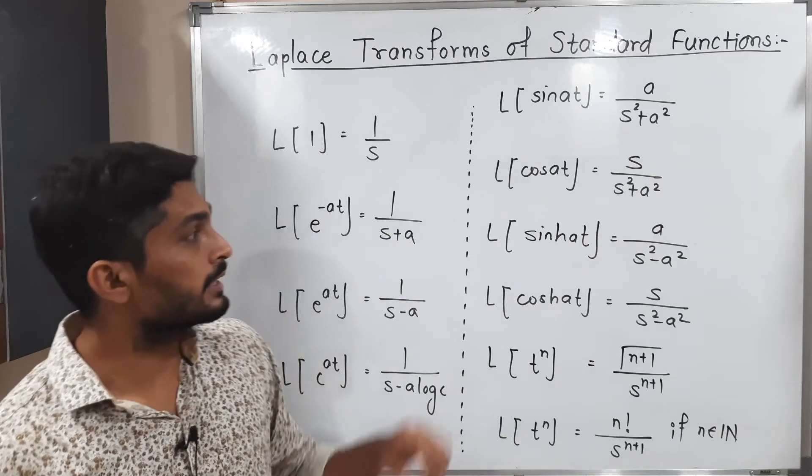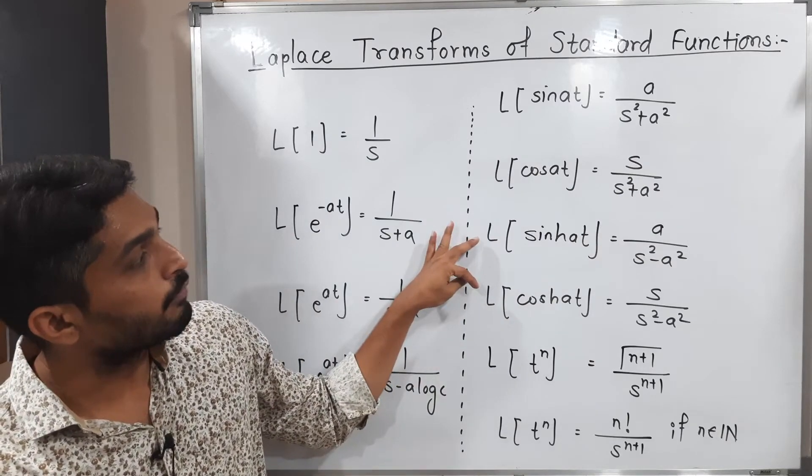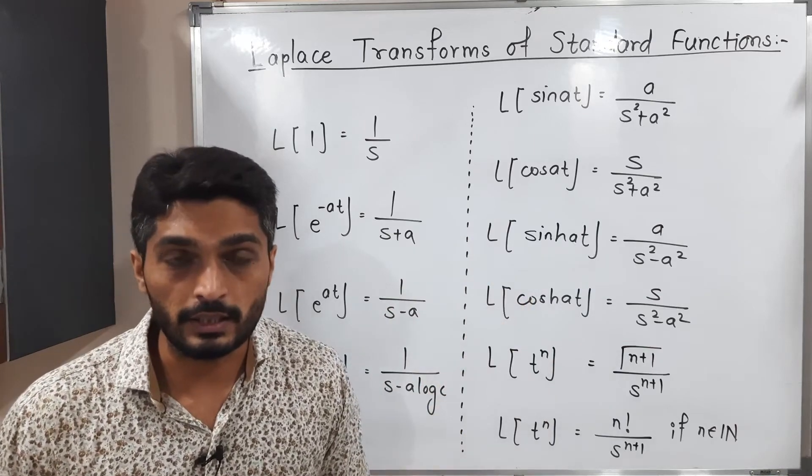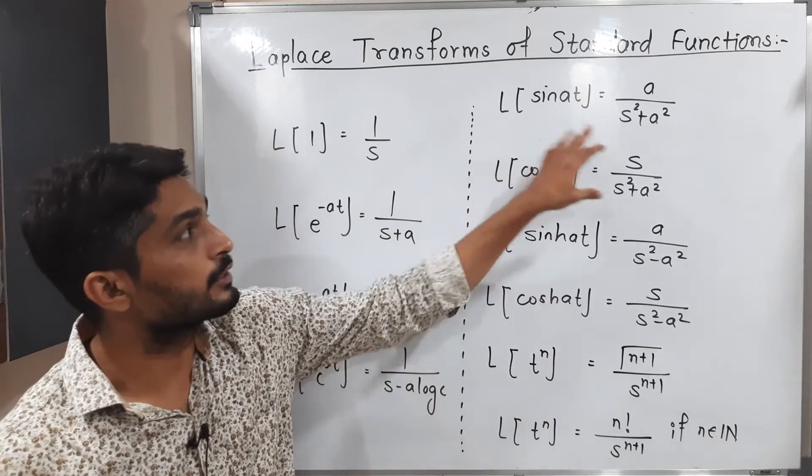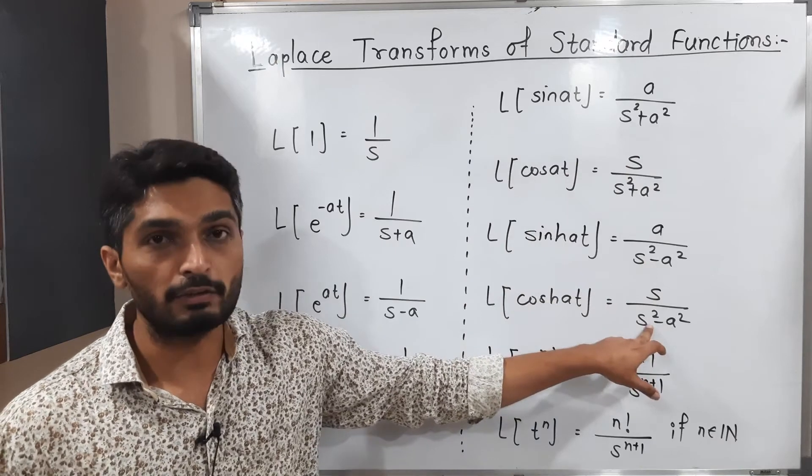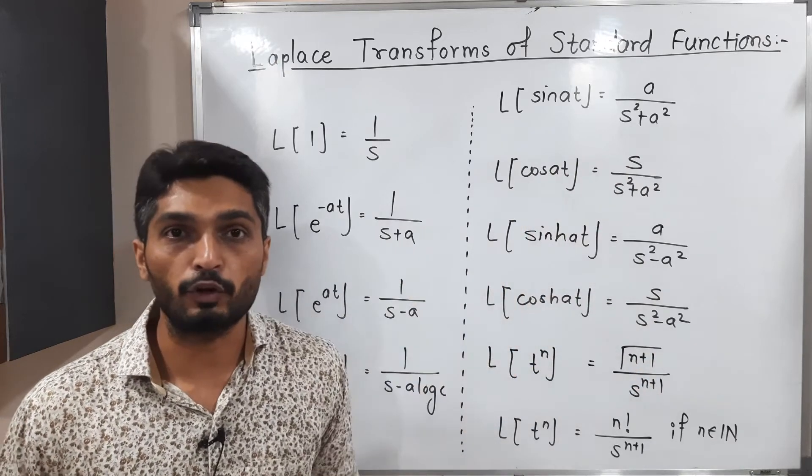Similarly you can easily keep in your mind the formulas of hyperbolic sinh(at) and hyperbolic cosh(at). Both have the same formula just instead of plus we have a minus sign between them. Otherwise the remaining part of formula are same.